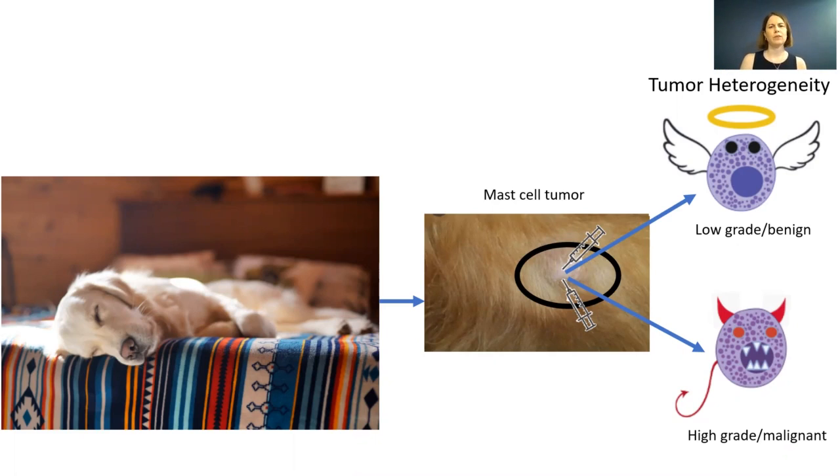You make an appointment the next day. Your veterinarian aspirates the bump and sends it off to the lab. She calls you later and tells you Kit has a mast cell tumor. Your mind is racing. What is a mast cell tumor?